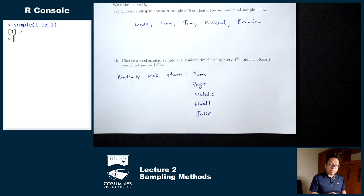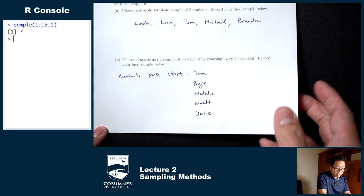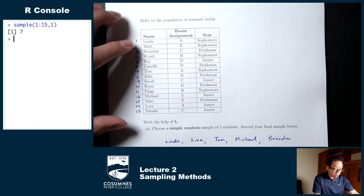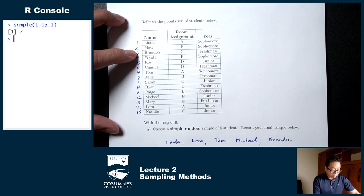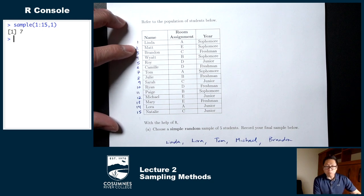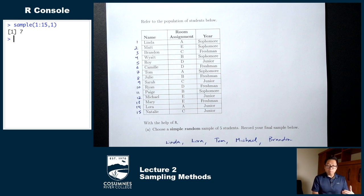That's how you pick a systematic sample. It's important that you use some random process to pick that first student. If you don't use any random process and always start with number one, then counting by four or five means certain people are never going to be picked. By choosing that first student using a random process, you ensure that everybody in the population has a chance of being picked.